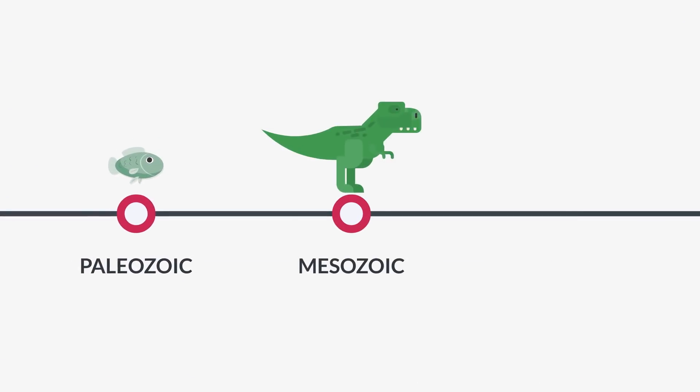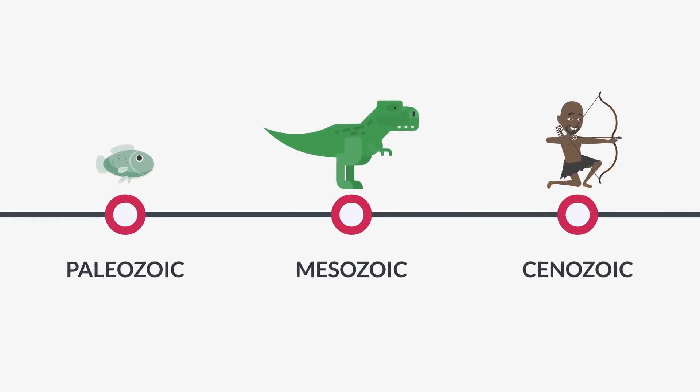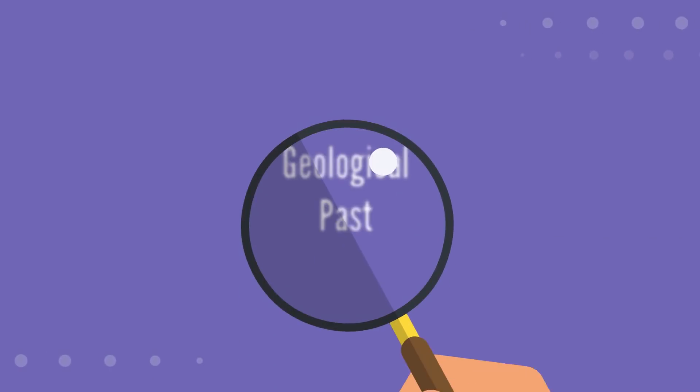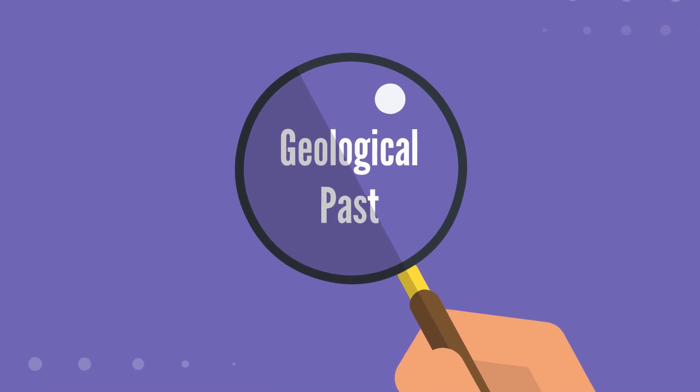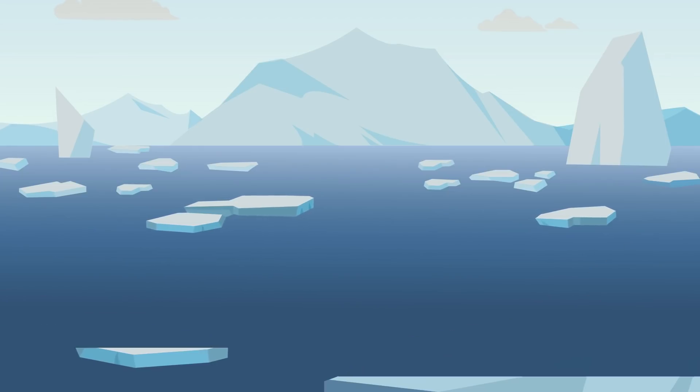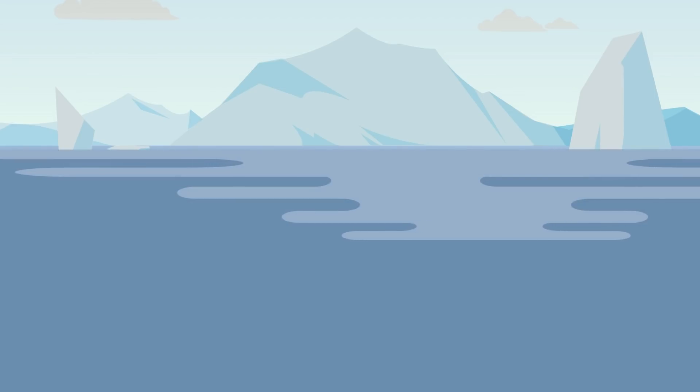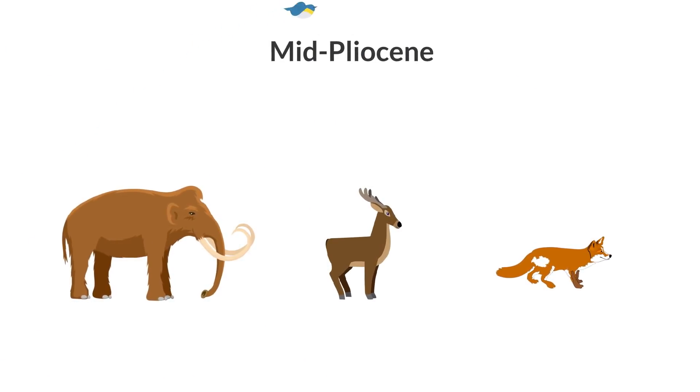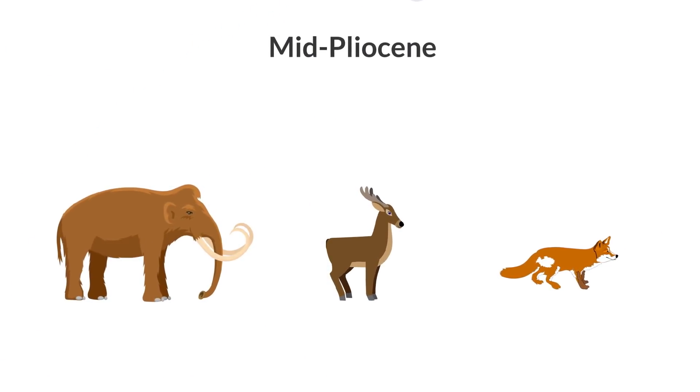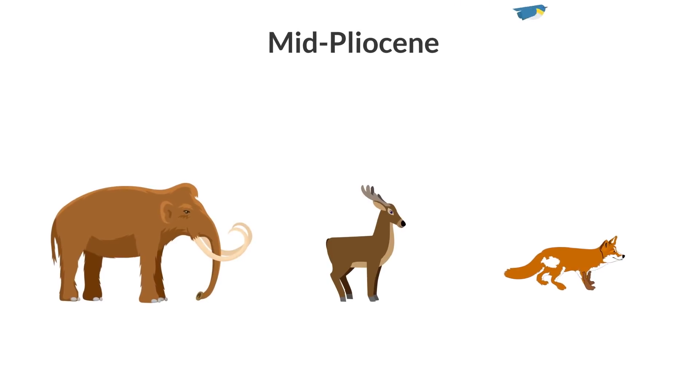Precise predictions of future climates are hard to achieve. However, Earth scientists can look into the geological past to find out what climates were like and how the ice sheets changed during these periods. The last time the atmospheric CO2 conditions were as high as today was around 3 million years ago, in the mid-Pliocene.